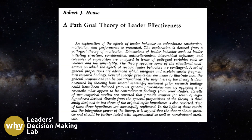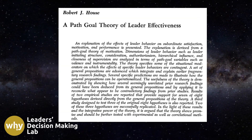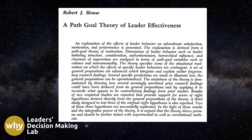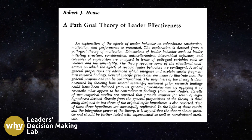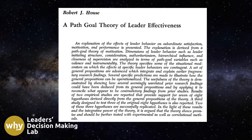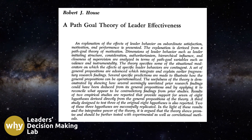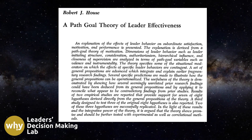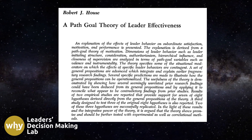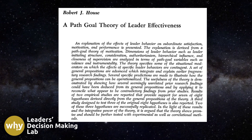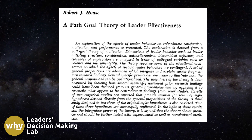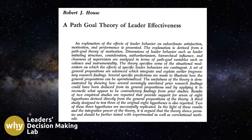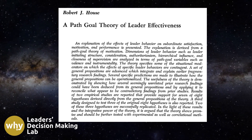The Path-Goal Theory of Leadership was first published in Administrative Science Quarterly in 1971, but its development can be traced back to the late 1960s when Martin Evans from the University of Toronto integrated expectancy theory to understand the effects of different leadership styles on employee behavior. Robert House was fascinated by this approach and recognized the influence of contextual factors on the effectiveness of specific leader behaviors. As a result, House theorized that a leader's behavior must be adjusted to fit the specific situation.